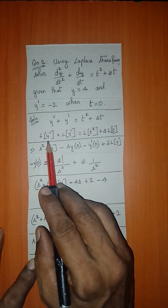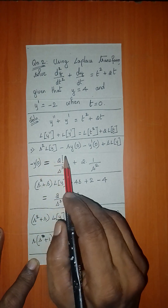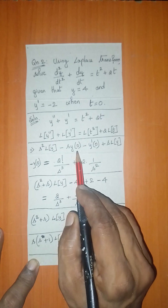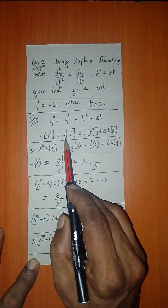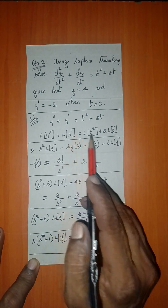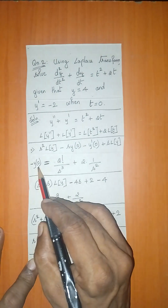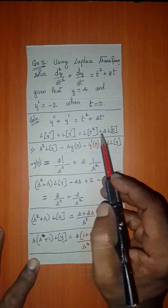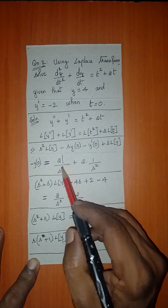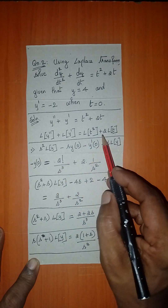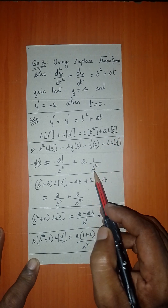Laplace transform of y double dash is s² · L{y} − s·y(0) − y'(0). Laplace transform of y dash is s · L{y} − y(0). This equals Laplace transform of t², which is 2!/s³, plus 2 into Laplace transform of t, which is 1/s².